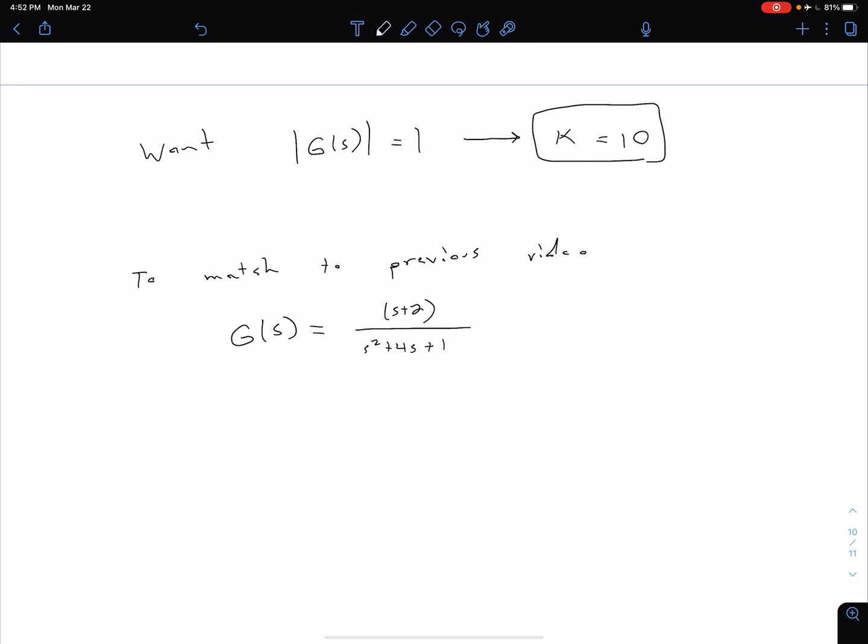How that would have changed the problem: we would have had K|G(s)| = 1, or K = 1/|G(s)|. I've not included H(s) because for unity feedback, H(s) = 1.